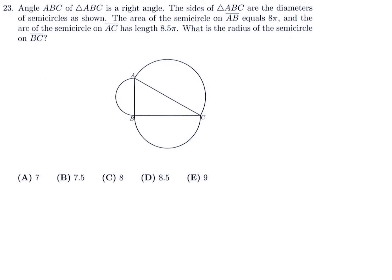Angle ABC of triangle ABC is a right angle, and the sides of ABC are diameters of semicircles. The area of semicircle AB is 8π. The area of a semicircle is πr² divided by 2, and setting that equal to 8π gives πr² = 16π. The π's cancel, so r² = 16, therefore r = 4. The radius is 4, so the diameter AB is 8.